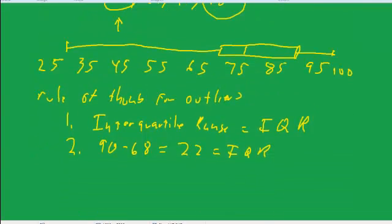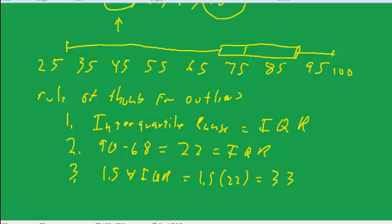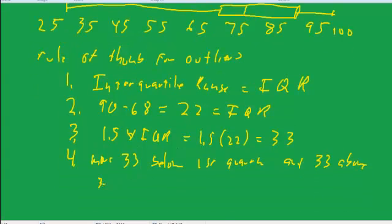Then we take one and a half times the interquartile range, so 1.5 times IQR is equal to 1.5 times 22 is equal to 33. Then we move, whatever this number is,